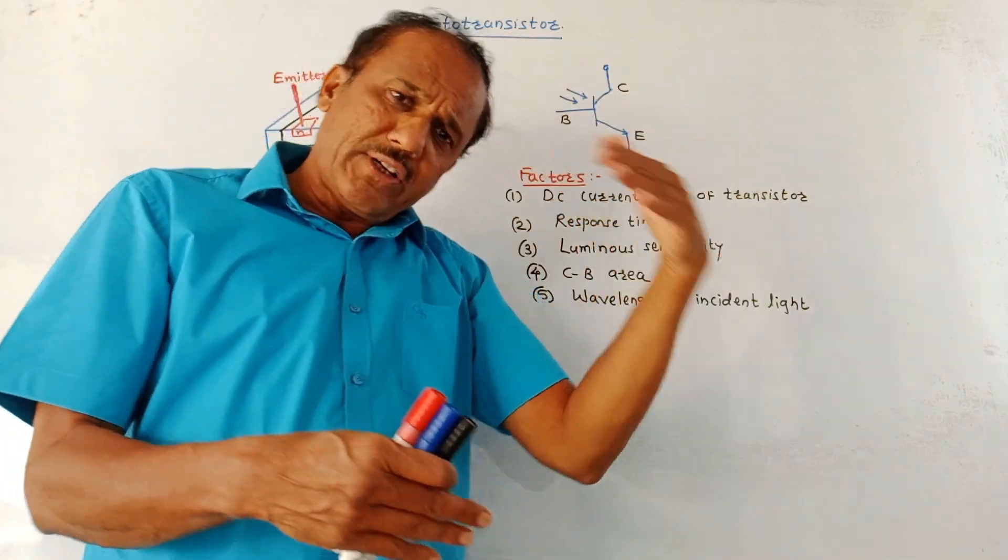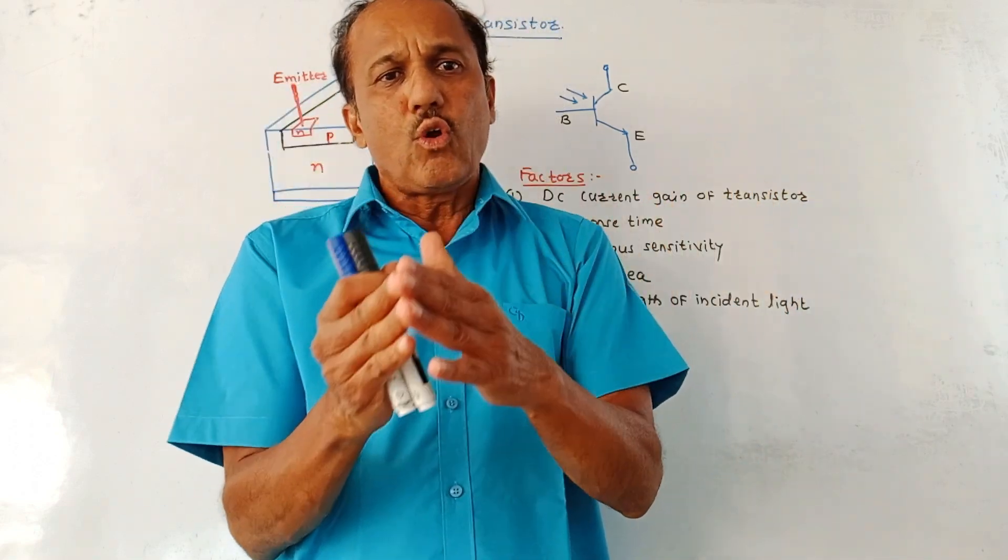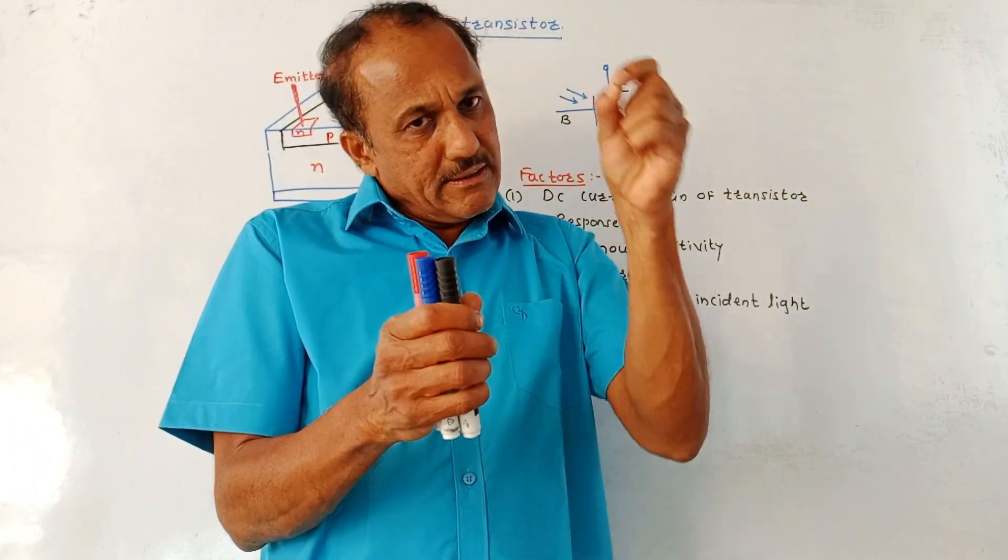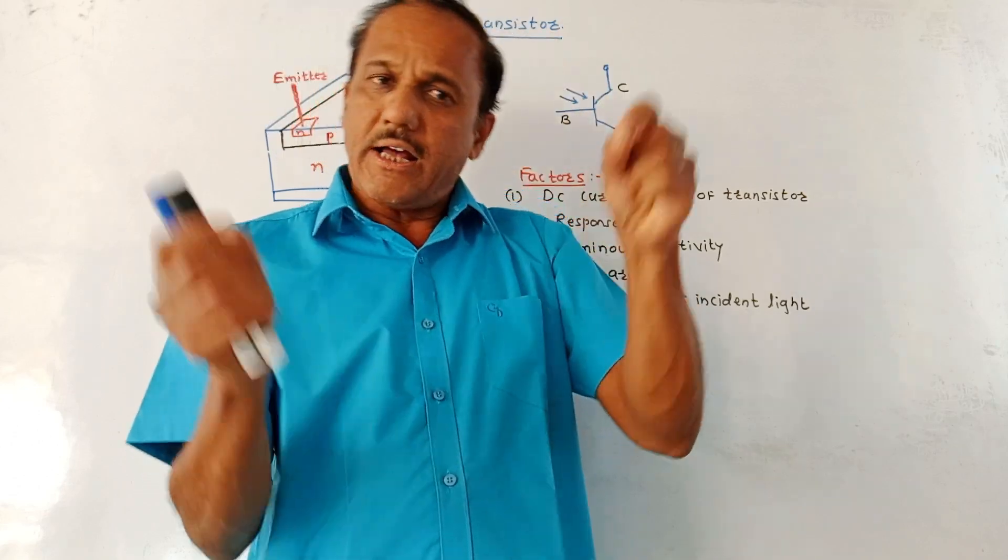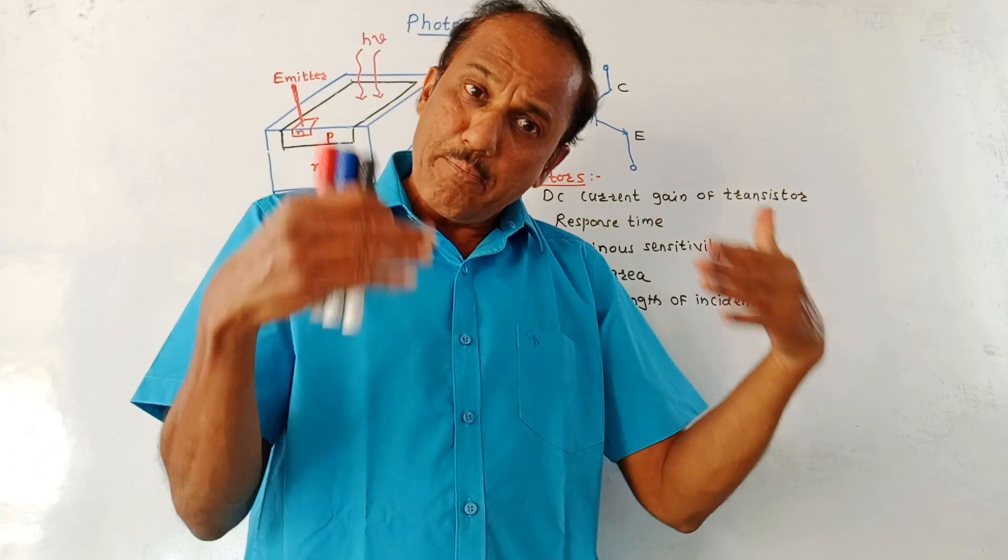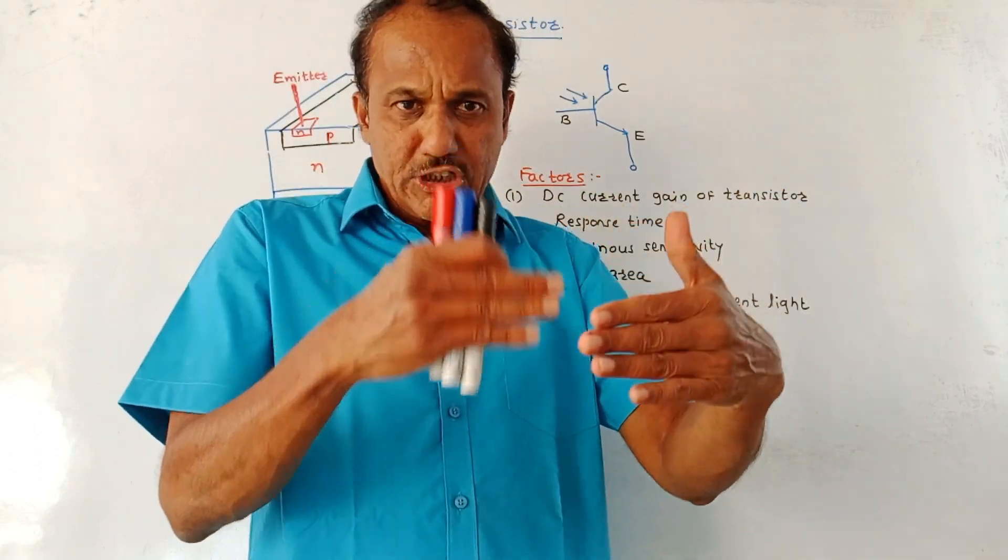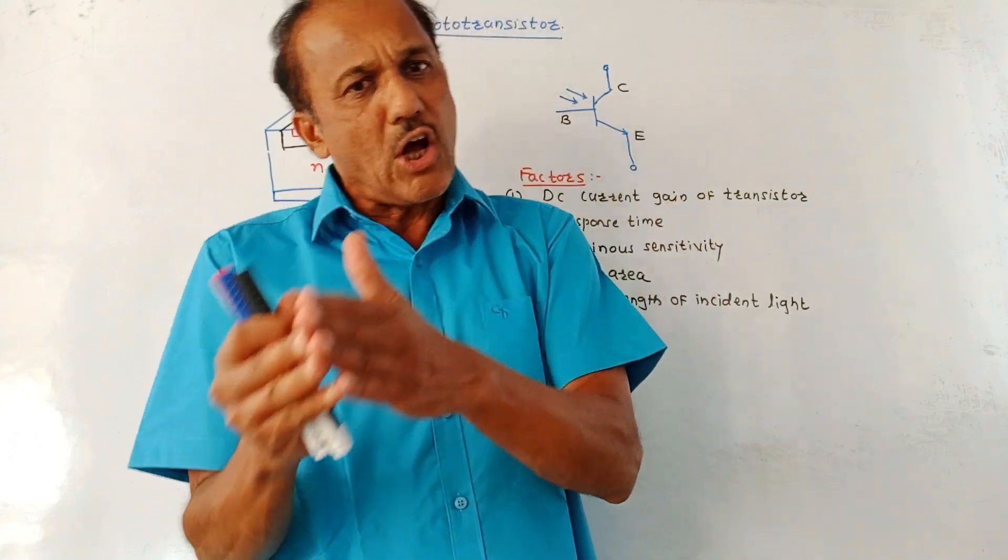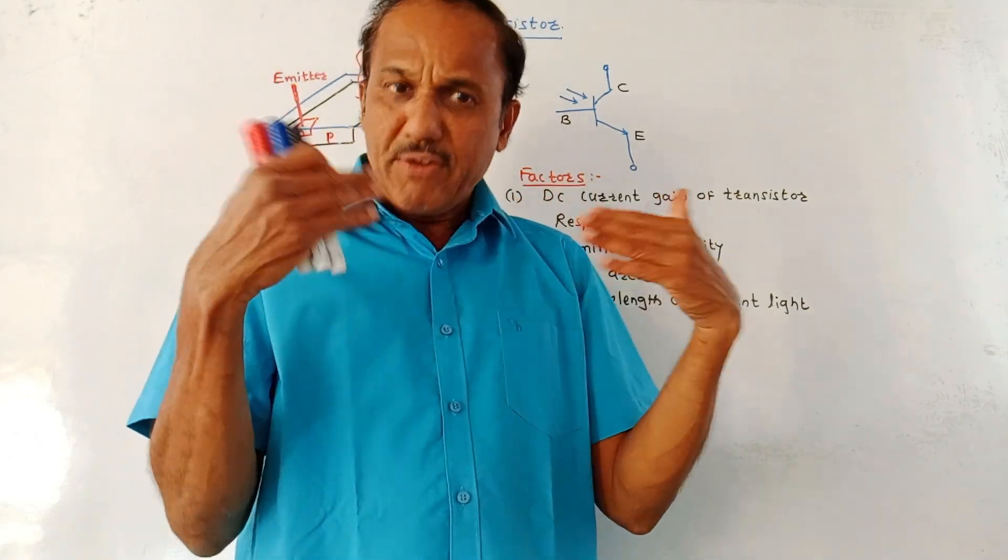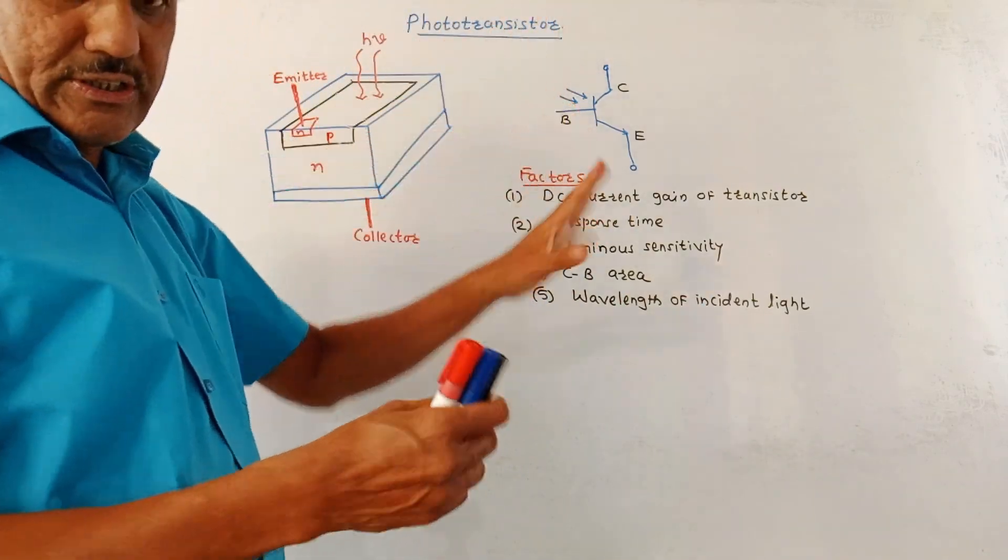Whenever the photons are falling, we know that it generates electron hole pairs. That means these incoming photons are responsible or these incoming photons generates the base current of a transistor. Then depending on the gain factor, transistor amplifies that base current and at the output, you are getting an amplified photocurrent. This is the basic principle of working of a transistor.